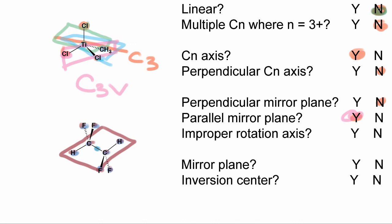Going through the point group flowchart: this molecule is not linear; we don't have any Cn axes greater than three, so we can rule that out; we do have a Cn axis, so that's a yes. Do we have a perpendicular Cn axis? We have the C2 axis going through the carbon-carbon bond, but a perpendicular axis would require a hydrogen to translate into another hydrogen over here, which isn't the case, so no perpendicular Cn axis. Do we have a perpendicular mirror plane? Yes — the mirror plane in the plane of the H-C-C-H linkage is perpendicular to the C2 axis. Based on that, we end up with C2h.